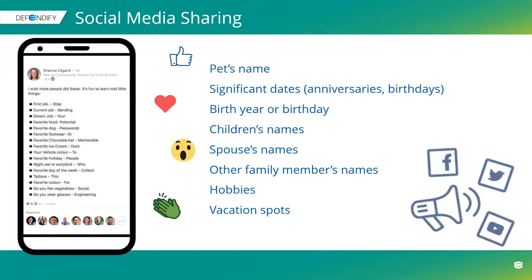Here's a real example: I guessed the door code on a house I'm buying by looking up the owner on social media — it was his birthday, month, day, and year. People use the same approach for garage codes and PINs. Think about this outside of your work context too. What you share publicly can be used against you in ways you might not expect.